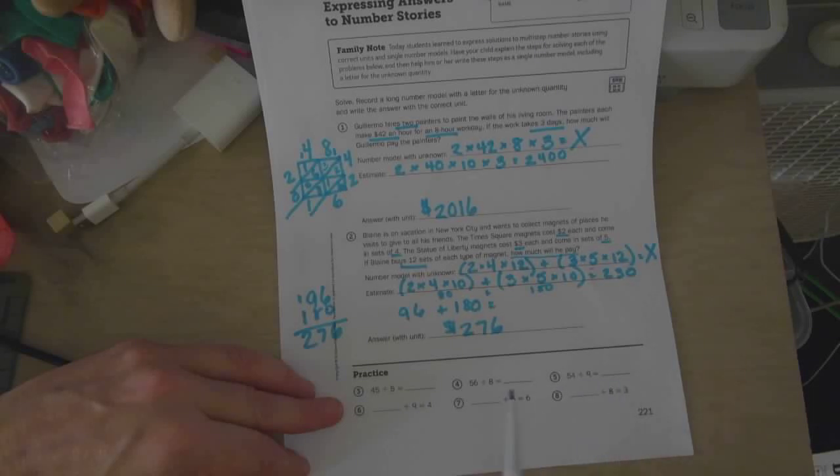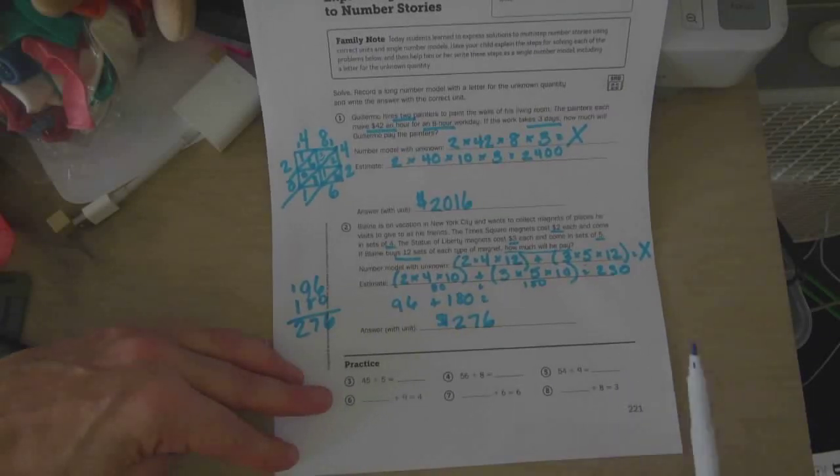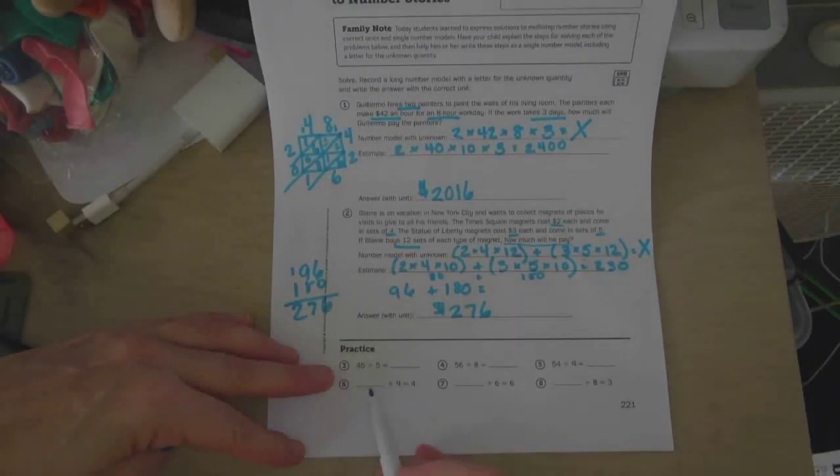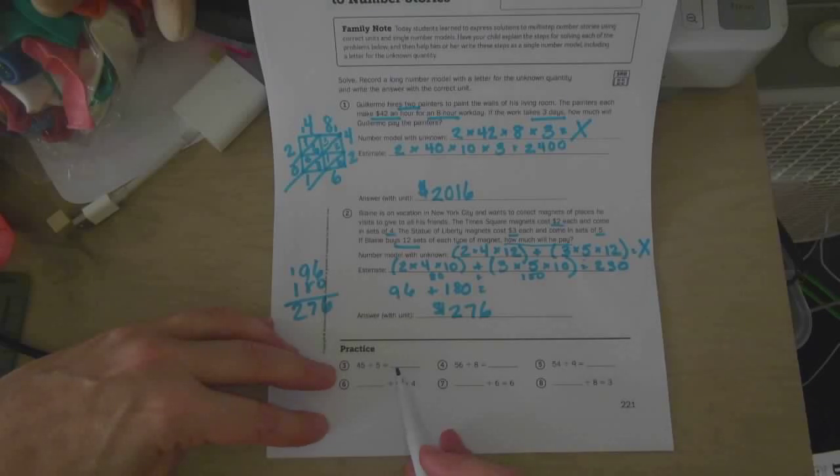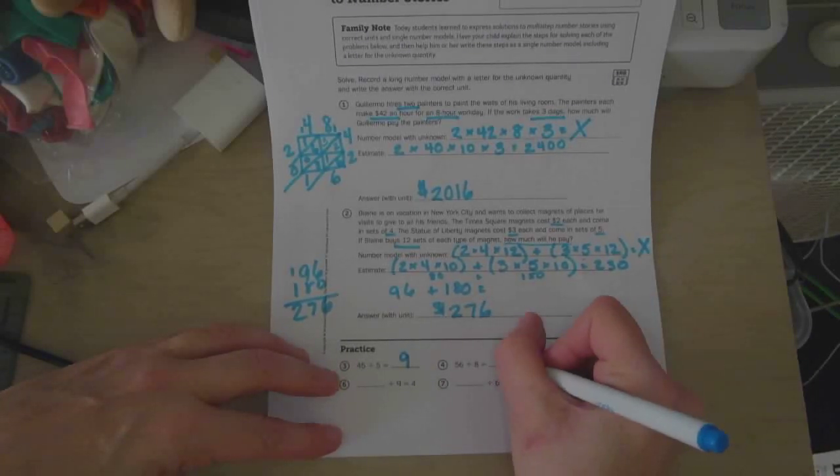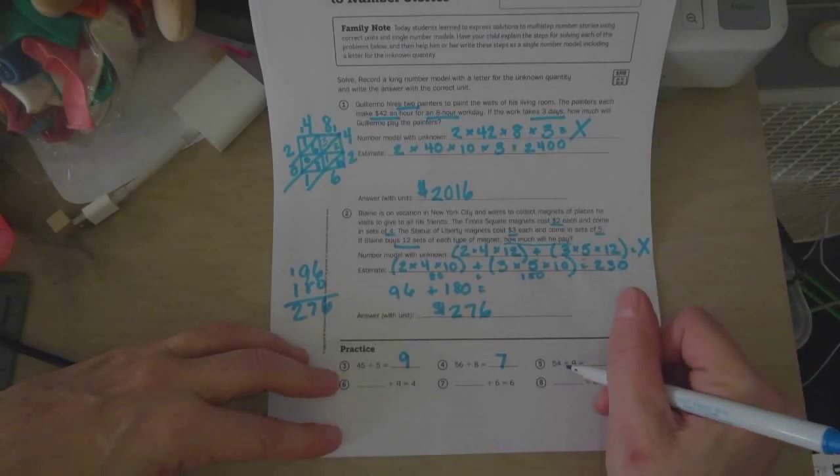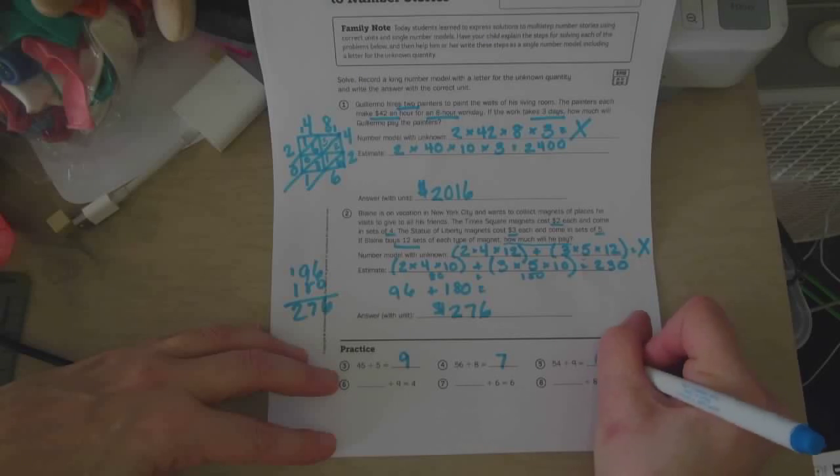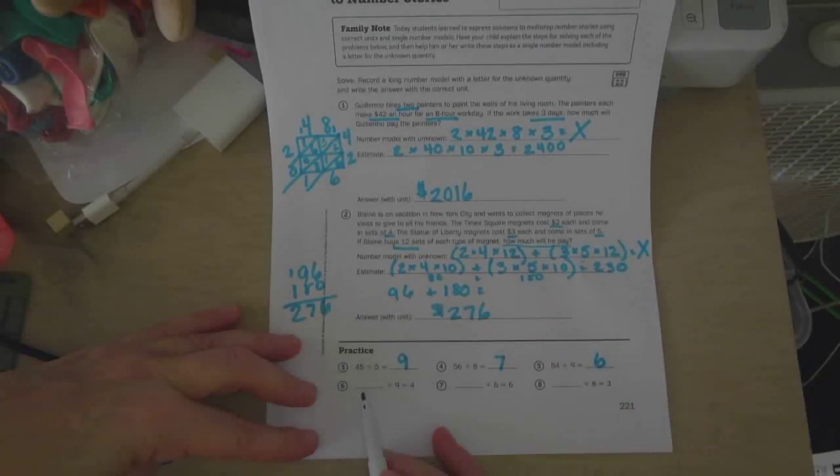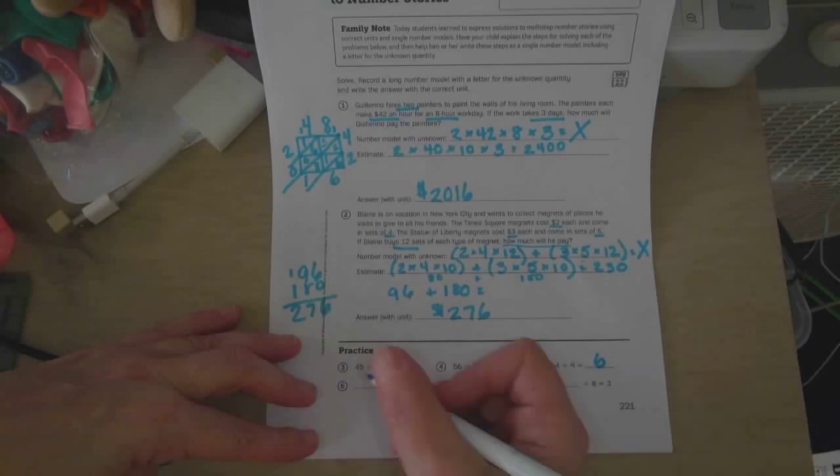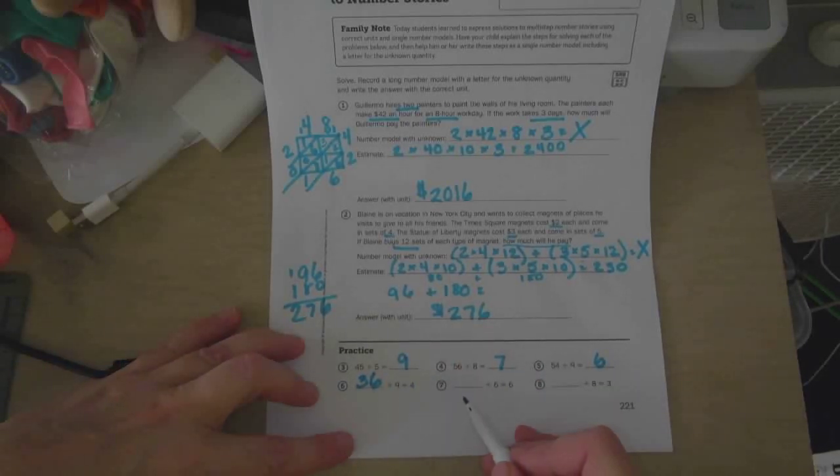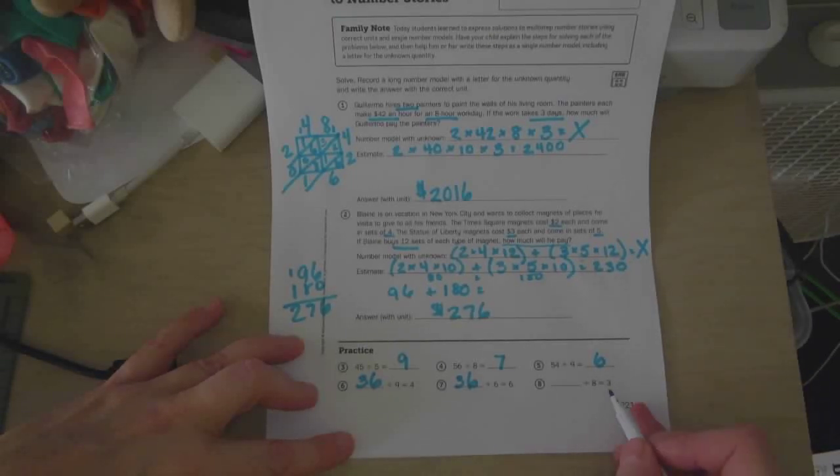Okay, so here's some division facts, some practice with division facts, which as we know, division is the opposite of multiplication. So, 45 divided by 5. What times 5 equals 45? 9 times 5 equals 45. 56 divided by 8 equals what? So what times 8 is 56? 7. 54 divided by 9, what times 9 is 54? 6. What number divided by 9 equals 4? So this time we're doing the opposite, 4 times 9, which is 36. This one's a little bit tricky. What number divided by 6 equals 6? 6 times 6 is 36 also. And what number divided by 8 equals 3? 3 times 8 is 24.